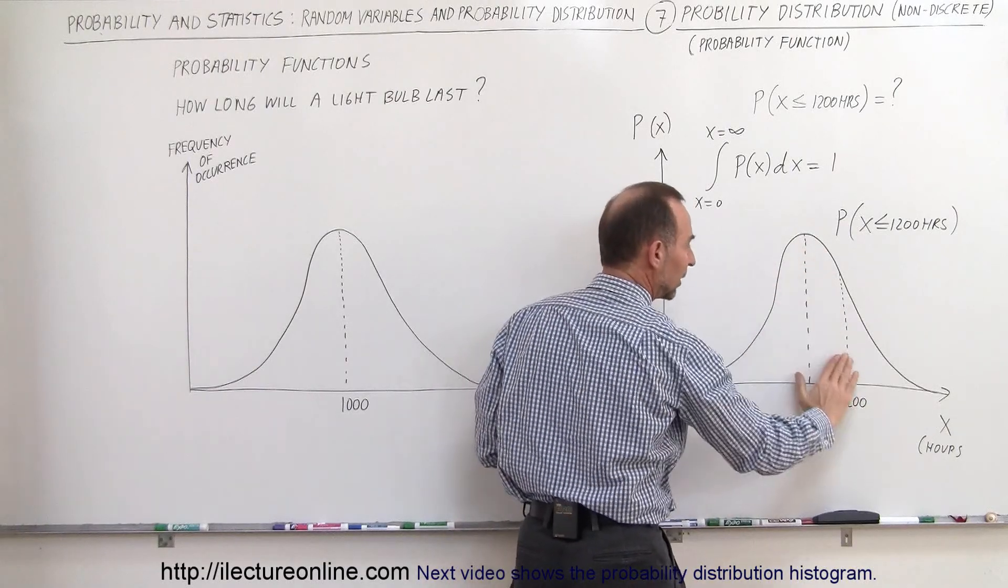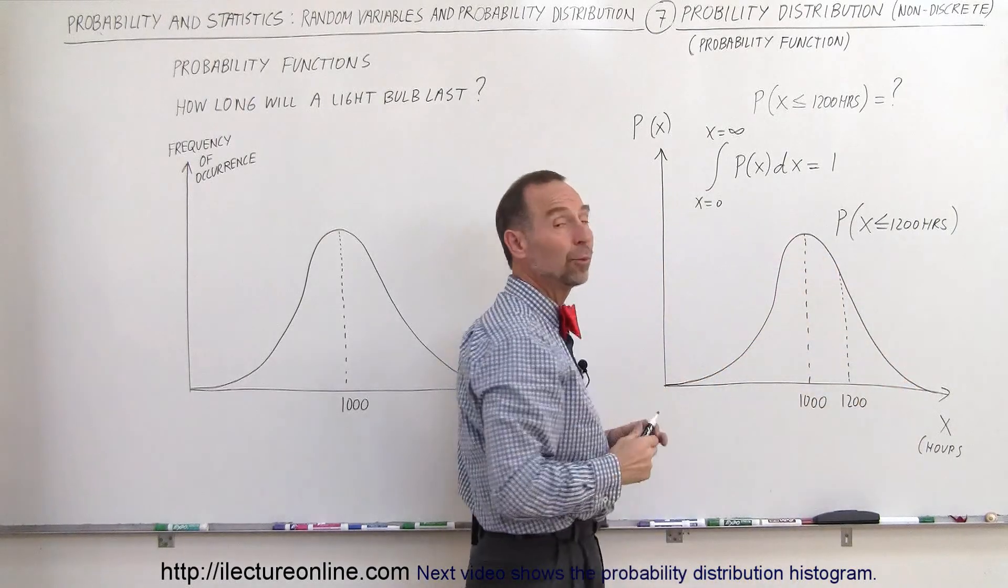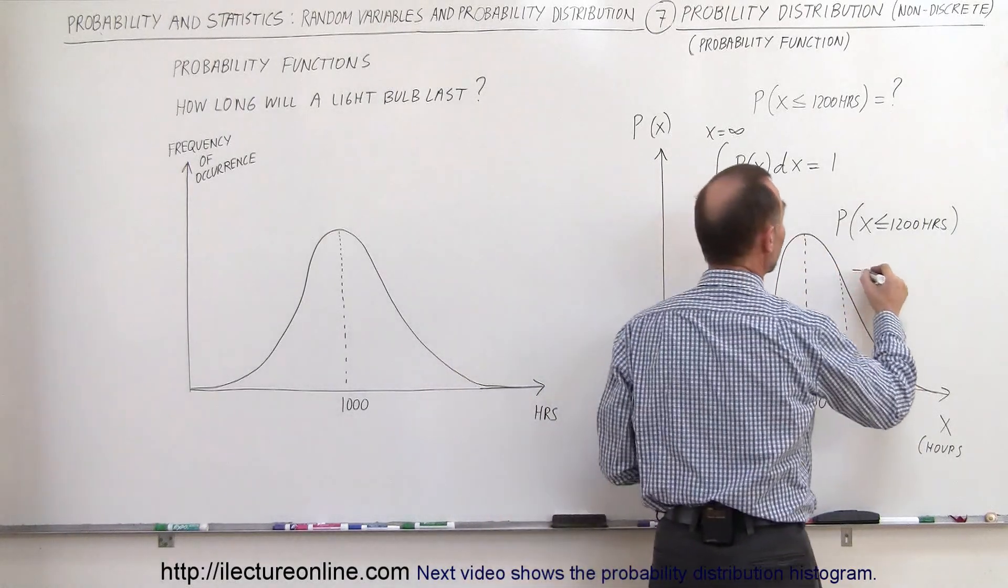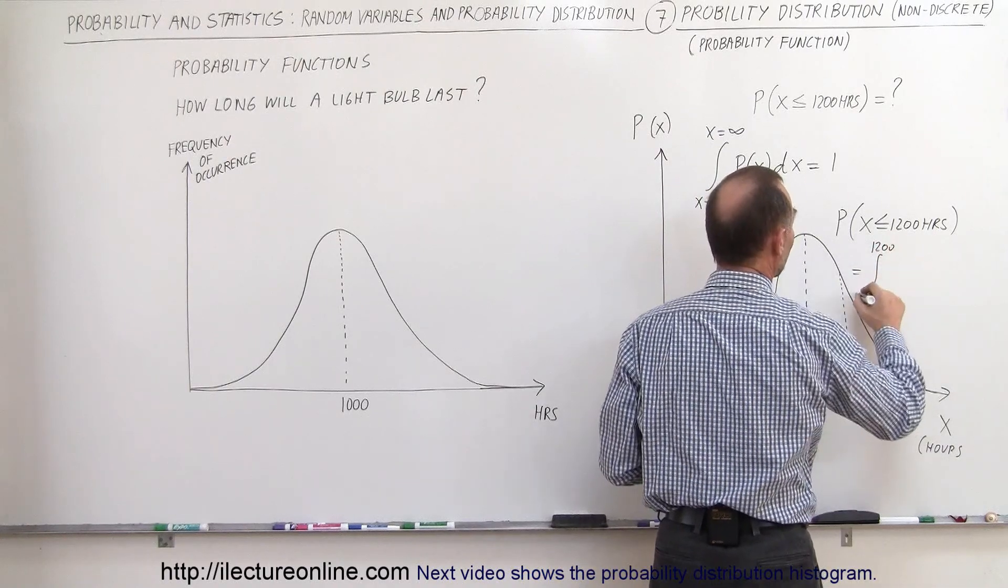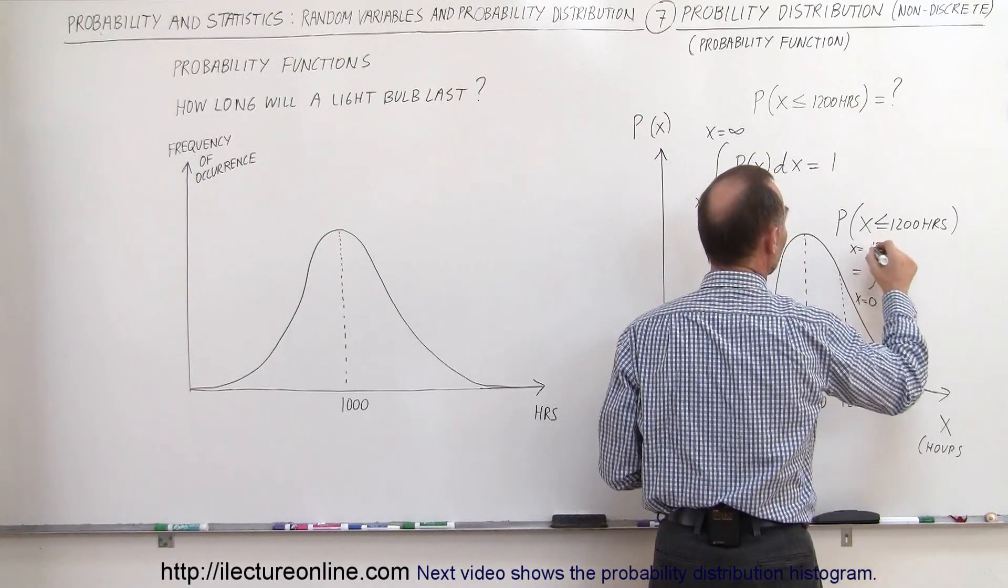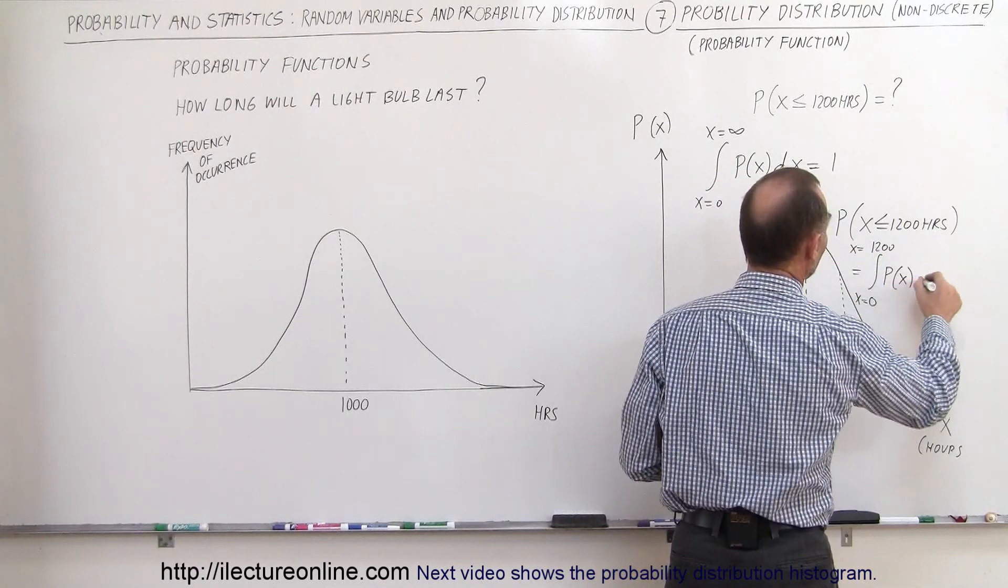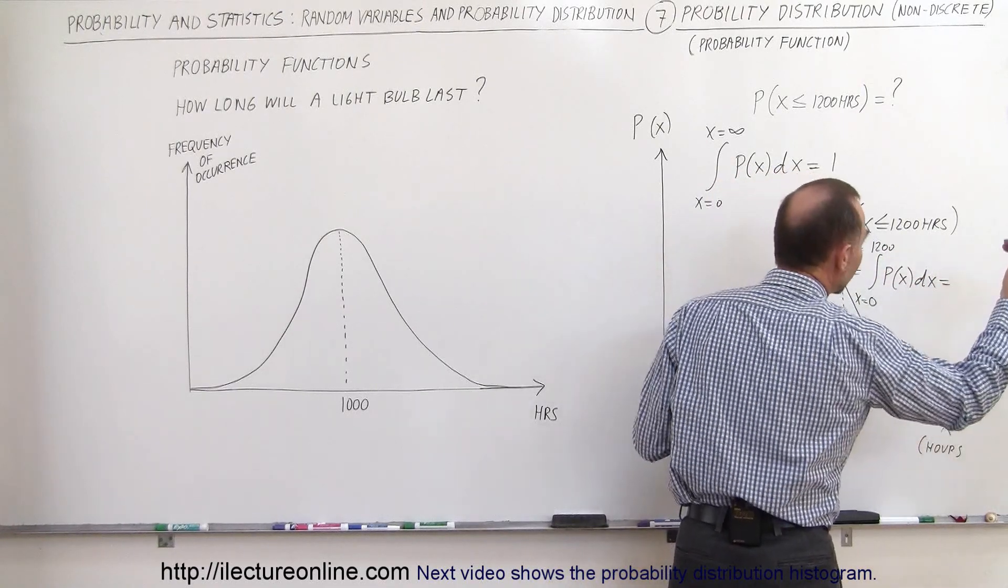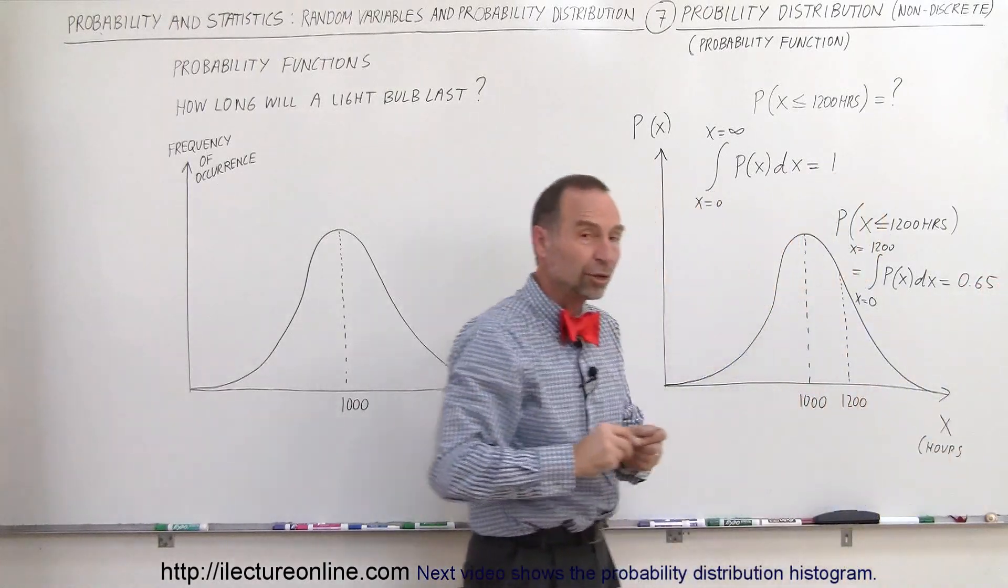1200 hours, so it'd be the area here as a function of the entire area which would be equal to one. This would then be the integral from 0 to 1200, and that would of course be x equals 0 to x equals 1200 of the function as defined by this p of x dx.